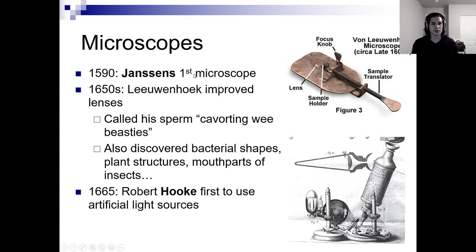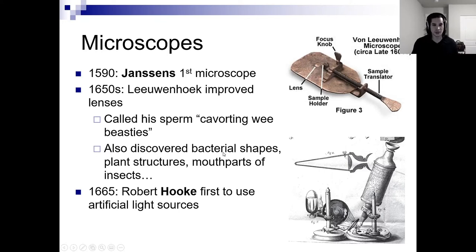So Janssens was the first person to invent the microscope. It used natural light. Then Leeuwenhoek came along about 60 years later and improved his lenses. He had a lot of time on his hands, so he got to look at his sperm under the microscope, and he called them 'cavorting wee beasties.' That's just a fun fact. He also discovered bacterial shapes, the structures of plant cells, and mouth parts of insects.